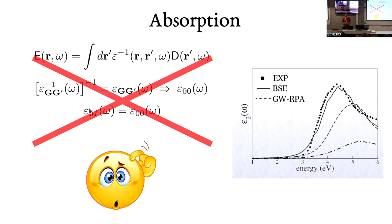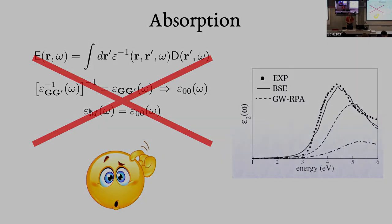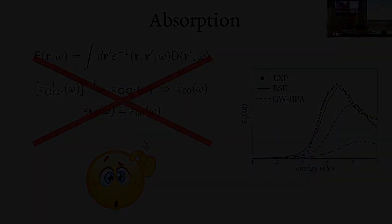Now you are almost ready to know how to actually calculate this quantity. So far we have dealt with what to do with these quantities and how to compare with experiment once you have calculated them. Now comes the point of calculating ε⁻¹ or ε, and for this we need to know how to proceed.